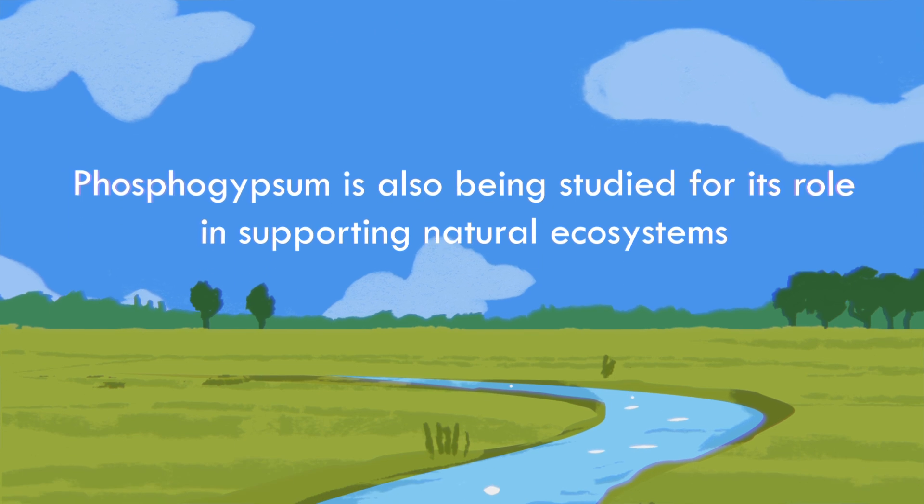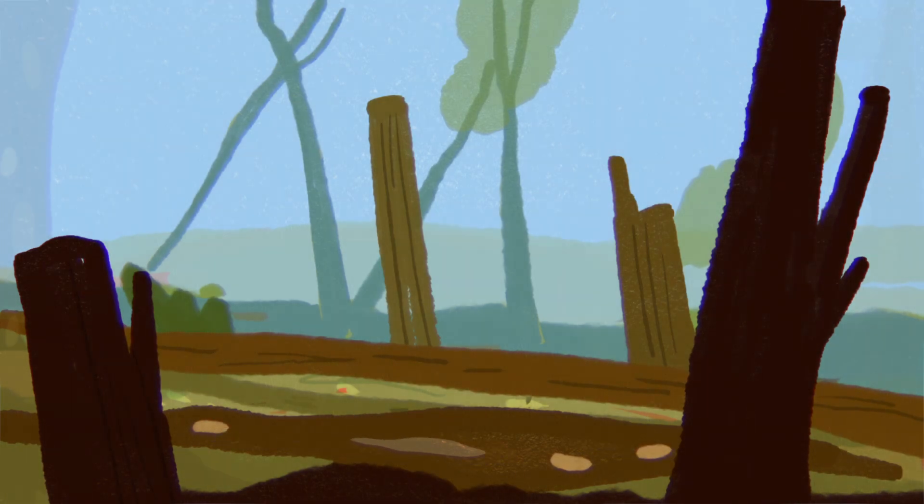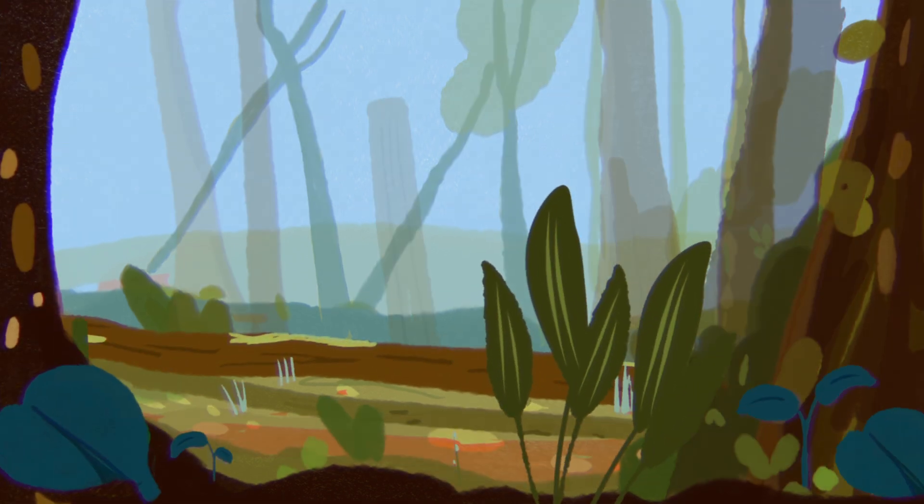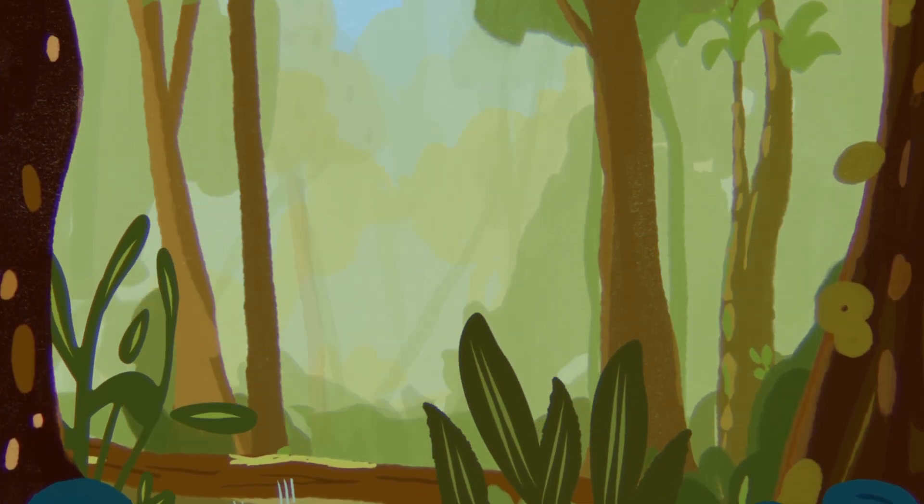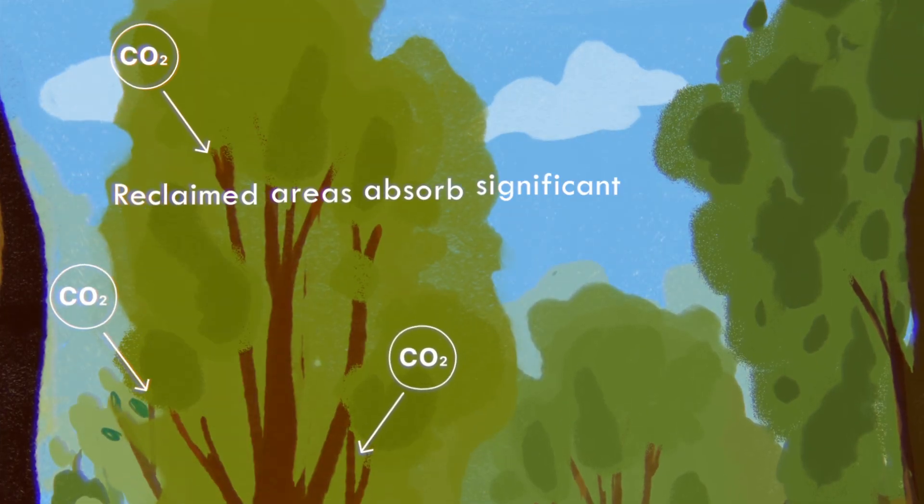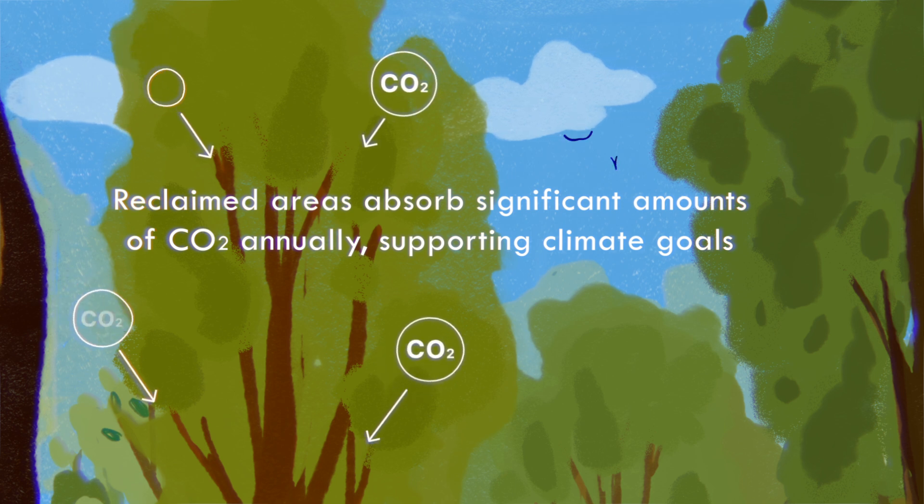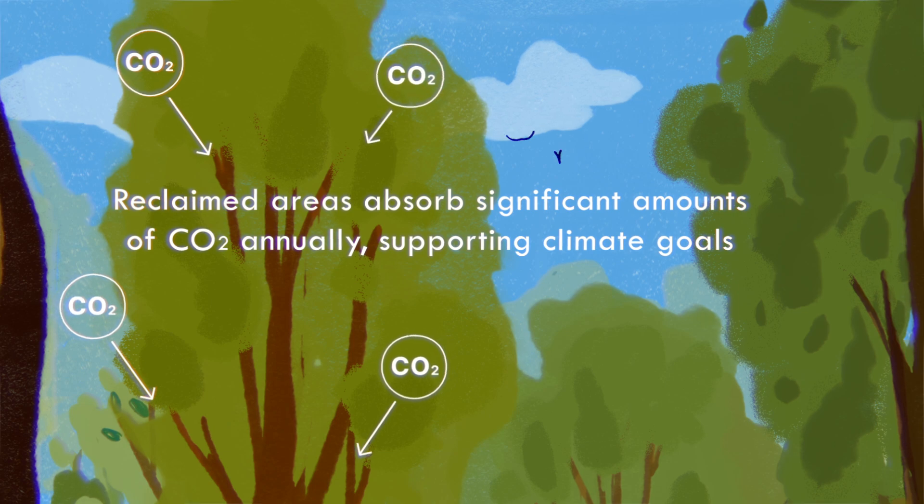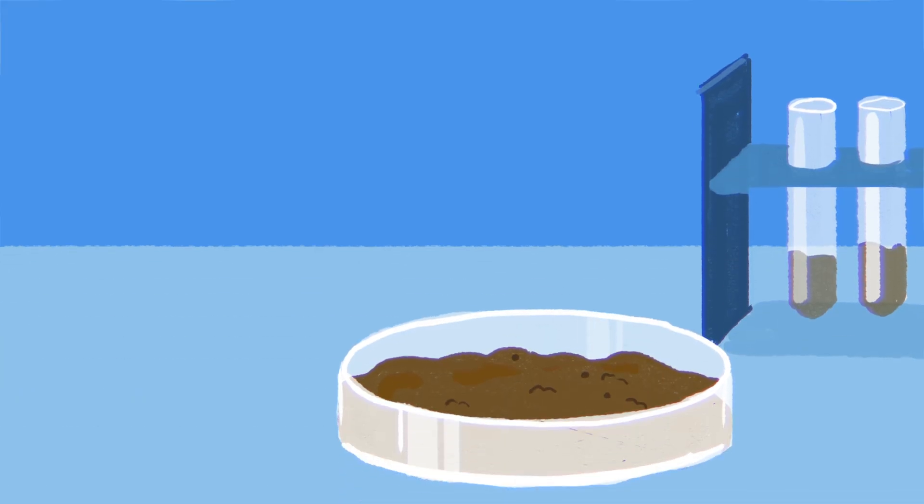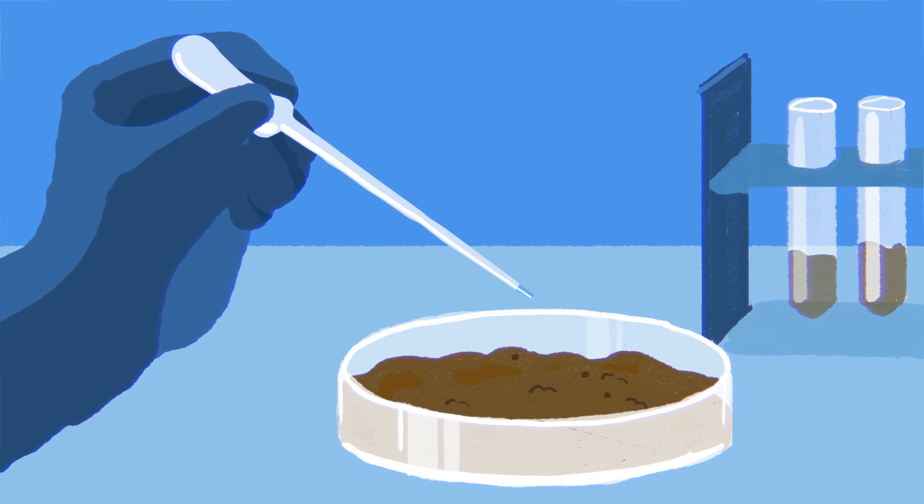Phosphogypsum is also being studied for its role in restoring and supporting degraded ecosystems. Research shows that when mixed into certain soils, it helps create the right conditions for young trees to grow strong and healthy, allowing forests to flourish. Regenerated forests have the potential to capture large amounts of carbon dioxide every year, making them a great step towards managing resources more sustainably. Right now, researchers are making sure this is done safely and in line with environmental standards.